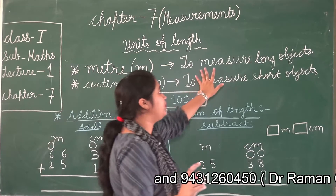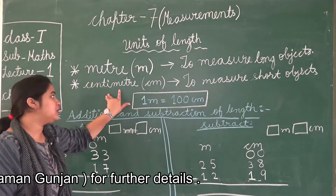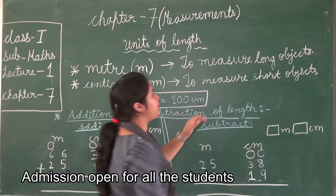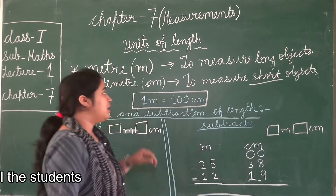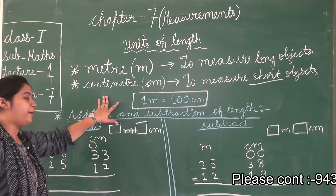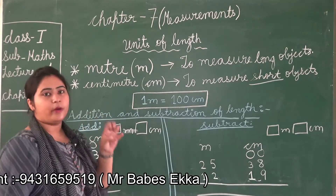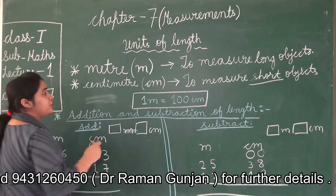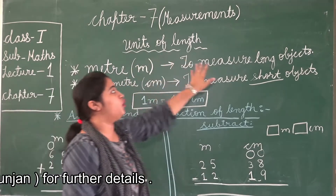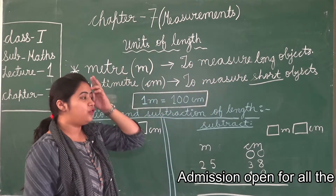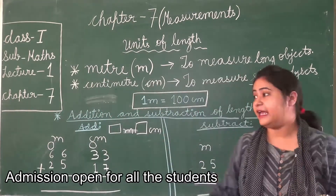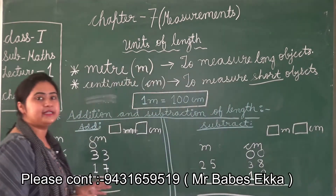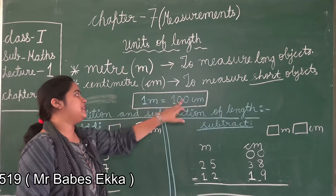Centimeter is also a unit of length. The symbol for centimeter is 'cm'. It is used to measure short objects. Like when we draw a line of 2 cm or 3 cm on a copy, that is a short object. For short objects we use centimeter, and for long objects we use meter. One important thing to always keep in mind: 1 meter is equal to 100 centimeters. So meter is long and centimeter is short.